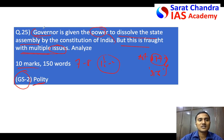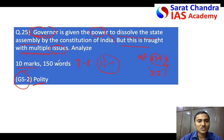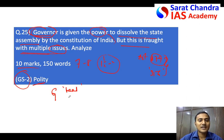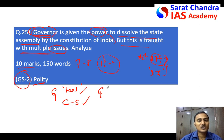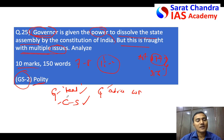For these kinds of questions on the Governor or President, in the introduction — the first two to three lines — just write who the Governor is and what his powers are. You can write that the Governor is the constitutional head of the state and the agent between the center and state, and that the Governor generally has to take decisions based on the advice of the Council of Ministers. These three statements should be written for any question on the Governor.